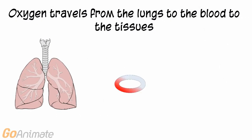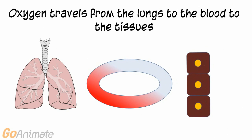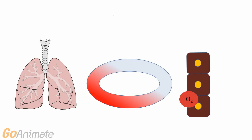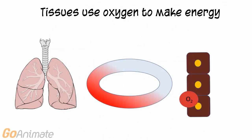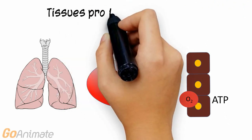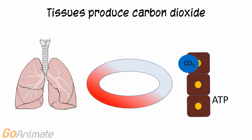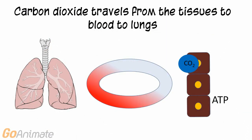Oxygen travels from the lungs to the blood and is carried to the tissues. The tissues use oxygen for making energy, and this process produces carbon dioxide. The carbon dioxide moves into the blood and is carried to the lungs to be eliminated when we exhale.